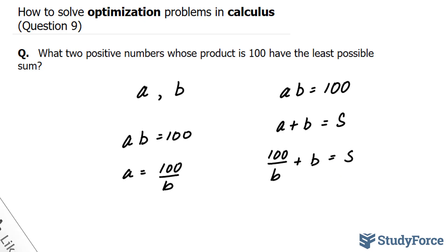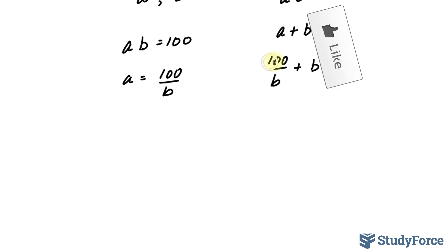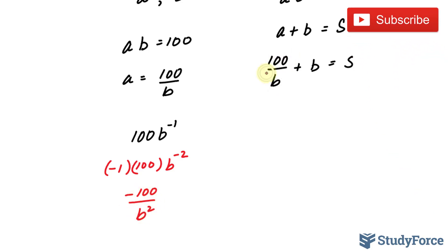Let's go ahead and find the derivative implicitly in terms of B. The derivative of 100 over B, well we'll need to use the power rule here, but remember 100 over B is the same thing as saying 100 times B to the power of negative 1. So if we use the power rule here, this negative 1 gets multiplied to the 100, so we have negative 1 times 100, B and negative 1 minus 1 is negative 2. So the derivative here is equal to negative 100 over B to the power of 2.